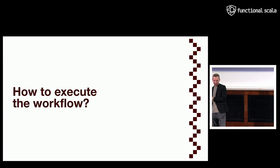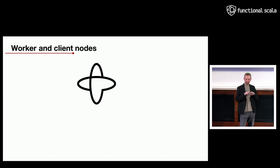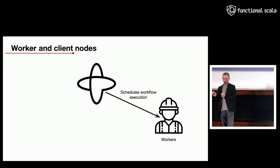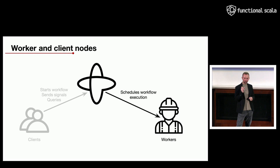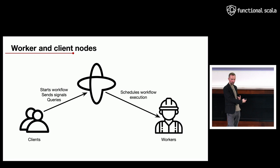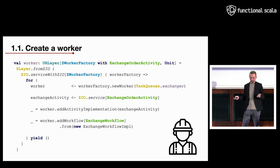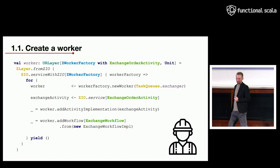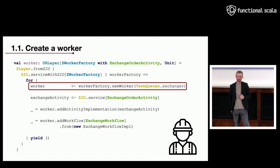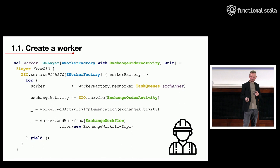But how do we actually execute them? We have the description but we need to start it. Keep in mind two concepts: the Temporal cluster schedules workflows for execution to worker processes, and client applications start workflows by communicating with the cluster, send signals to those workflows, and query the workflow state. To run a workflow you start with the worker definition, using the worker factory which creates workers by providing them with the name of the task queue.